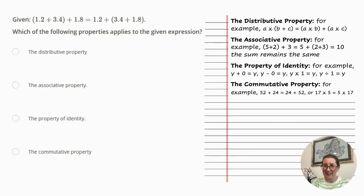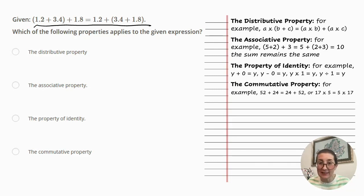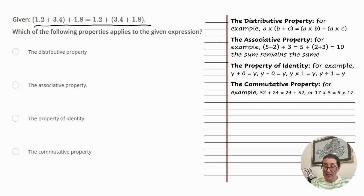We've reached the penultimate question for today, and we are asked which of the following properties applies to this expression. Let's go through each of the properties. The distributive property: when you multiply each part separately and add the products, you get the same answer. The example is a times (b plus c) equals (a times b) plus (a times c).